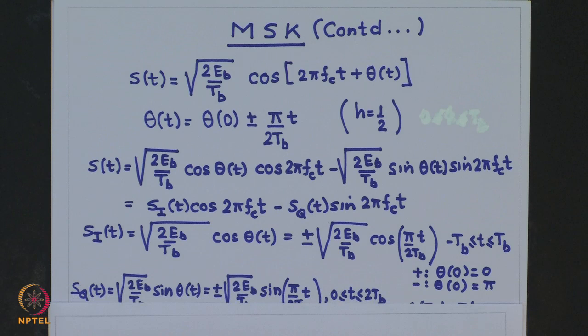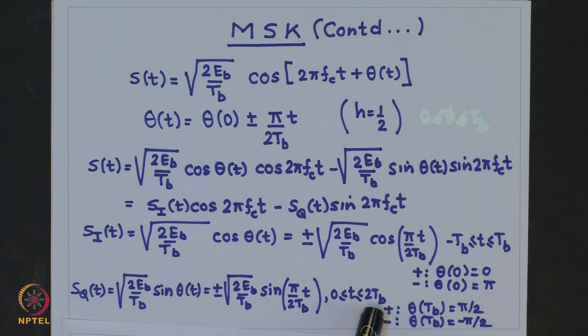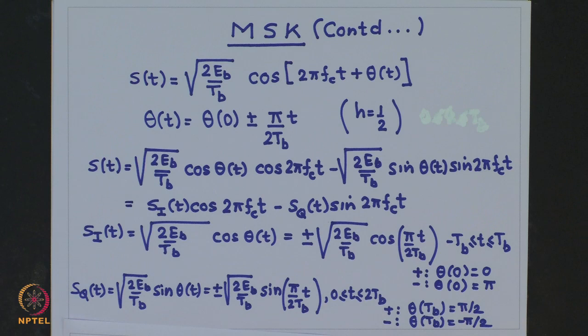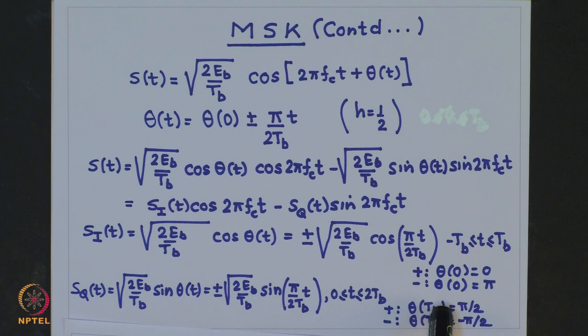S_q(t) similarly we showed is equal to the half sine wave, and the duration of that half sine wave is over the period 0 to twice T_b. S_i(t) and S_q(t) waveforms are displaced or offset by T_b seconds. The polarity of this half cosine wave and half sine wave is decided by the phase state at t equal to 0 and at t equal to T_b. If theta(0) is equal to 0, this quantity will be positive, and if theta(0) is pi then this quantity becomes negative.